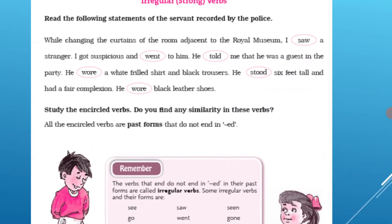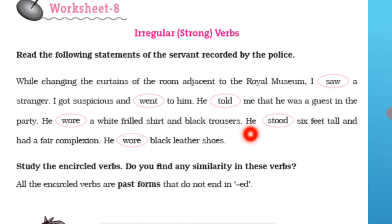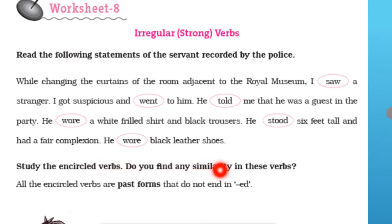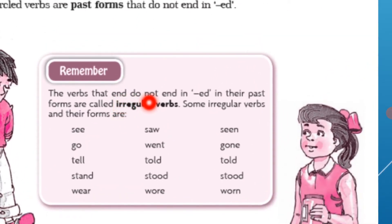Now let us move to the next topic: irregular verbs, also called strong verbs. While changing the curtains of this room adjacent to the royal museum, I saw a stranger. I got suspicious and went to him. He told me that he was a guest at the party. He wore a white frilled shirt and black trousers. He stood six feet tall and had a fair complexion. He wore black leather shoes. The verbs given in circles — all the circled verbs are past forms that do not end in E-D. They are known as irregular verbs. Verbs whose past forms do not end in E-D are called irregular verbs.